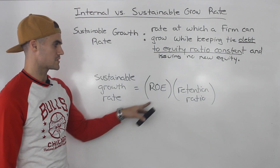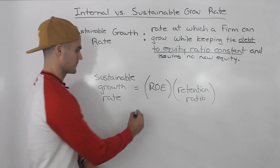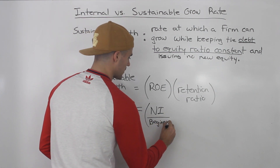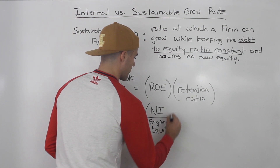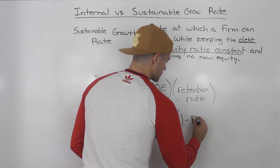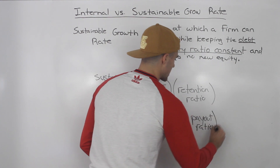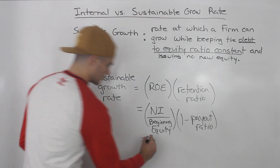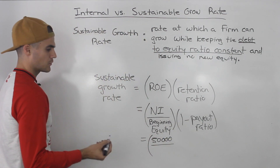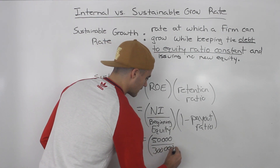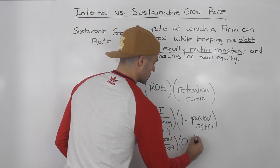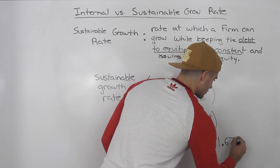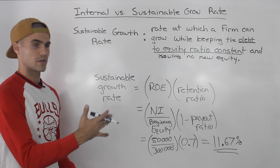The formula for the sustainable growth rate is: return on equity times the retention ratio. Return on equity is net income over beginning equity. So: $50,000 / $300,000 × 0.7 = 0.1167 or 11.67% — the same rate we got manually. The retention ratio can again be written as one minus the payout ratio; both expressions mean the same thing.